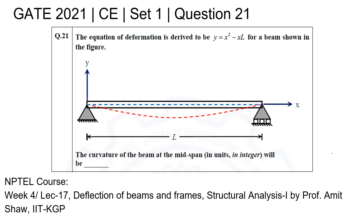Let us look at the solution for question number 21, Set 1, Civil Engineering GATE 2021. The equation of deformation is derived to be y = x² - xl for a beam as shown in the figure. The curvature of the beam at mid-span is what is asked, and we are expected to report our answer as an integer.